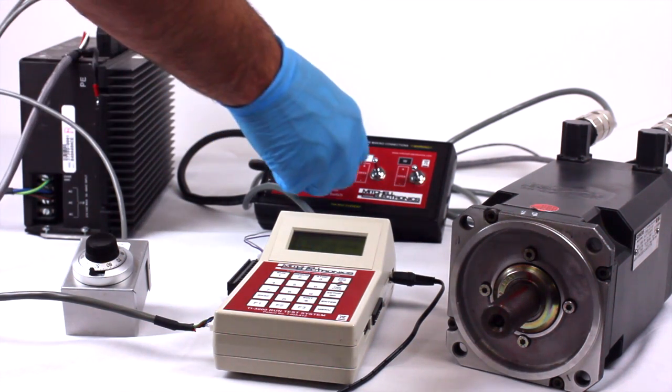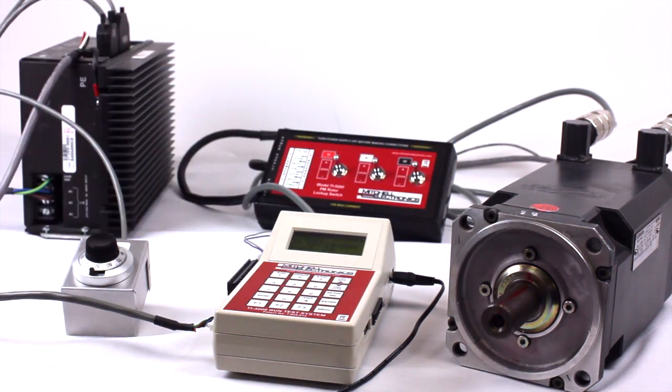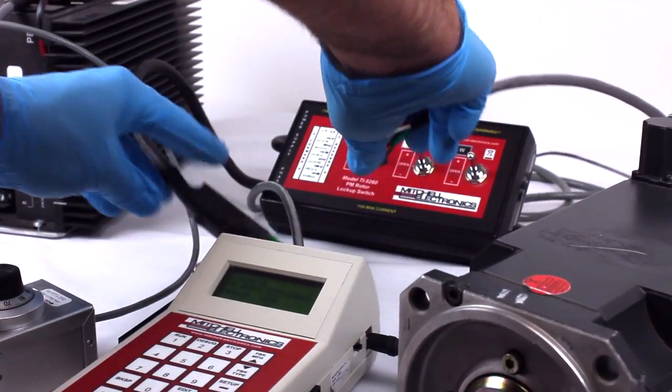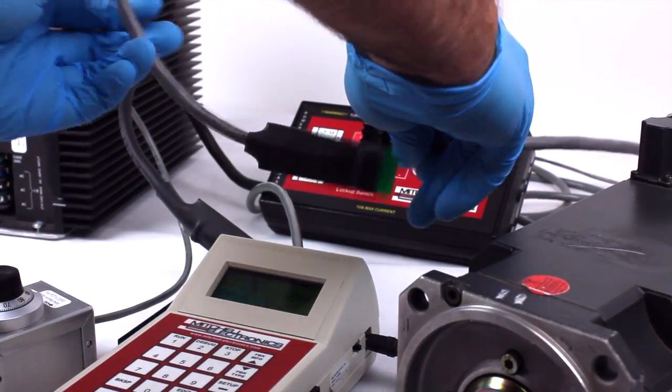Now proceed to run the motor. Move the motor power leads from the lockup switch over to the amplifier output.